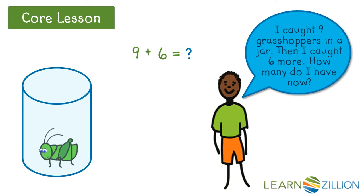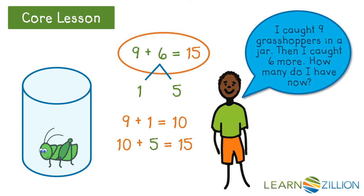9 plus 6 equals... 6 is the same as 1 plus 5. 9 and 1 is 10. And then we have 5 more. 10 plus 5 equals 15. So, 9 plus 6 equals 15. I have 15 grasshoppers.